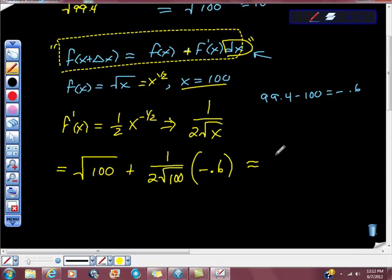about, because I have a rounding issue here, it's going to be about 9.96. 9.95, and that makes some sense because 99.4 is almost 100, and the square root of 100 is 10, so this is the square root of 99.4.